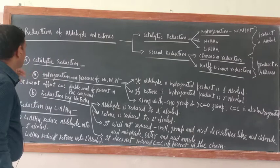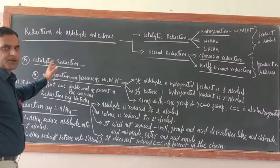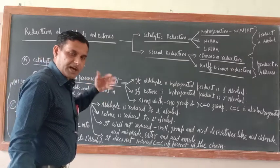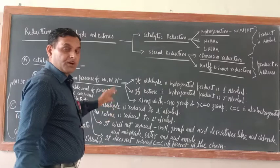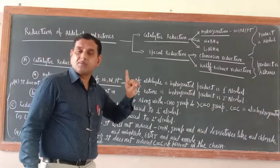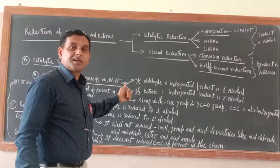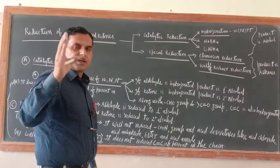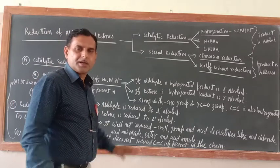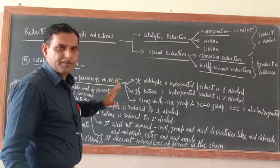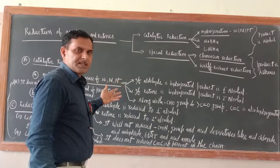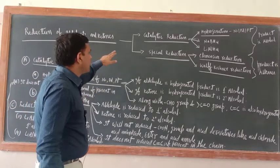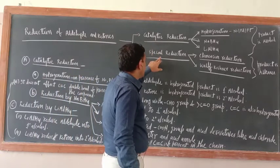Today another category of reaction is the reduction reaction of aldehydes and ketones. We have already discussed this when I taught methods of preparation of alcohol — because when aldehyde is reduced, a primary alcohol is formed. That is the method of preparation of alcohol, and here it is the chemical property of aldehydes and ketones. Since assertion-type questions and MCQs are included and Section A is completely objective type, we need some theoretical knowledge to solve those questions.